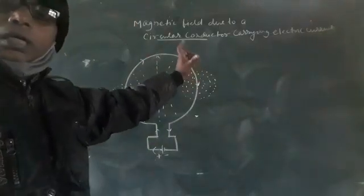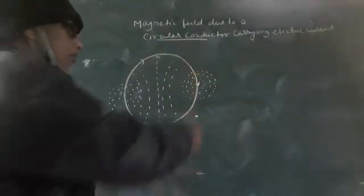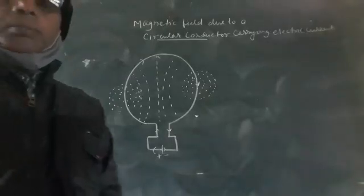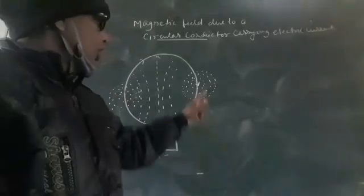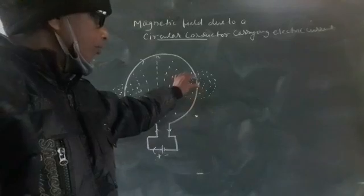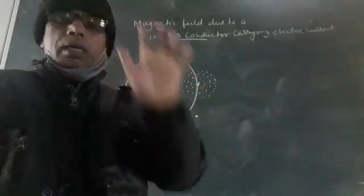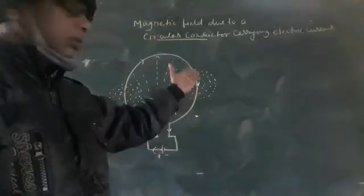And at the circumference, near the wire, near the conductor, it becomes circular. Because each portion of the wire behaves as a straight conductor, so the nature is circular.